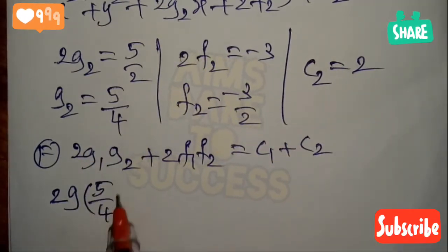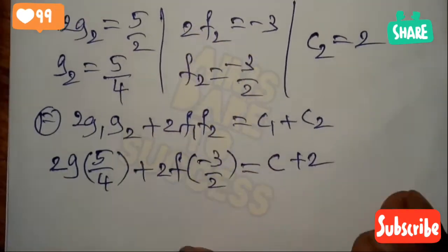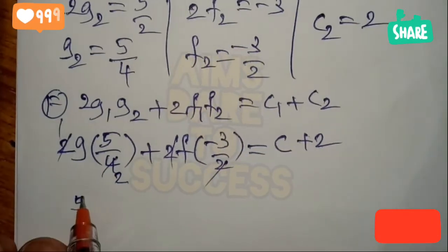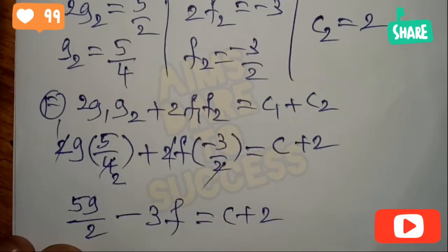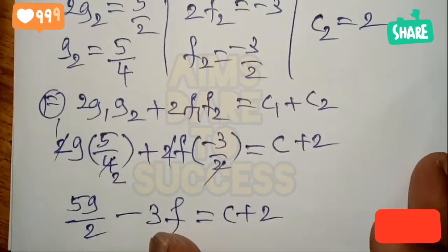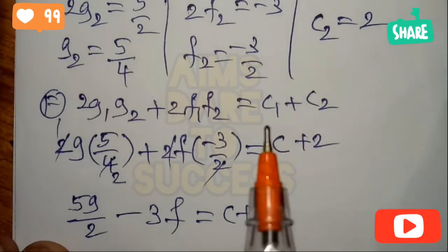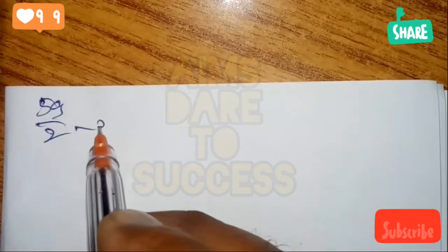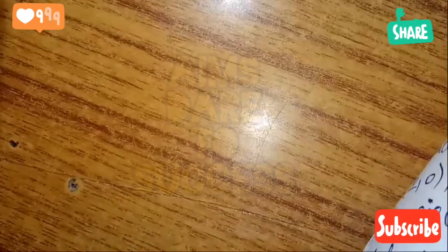Substituting values into the orthogonality formula: g₁ = g, g₂ = 5/4, f₁ = f, f₂ = -3/2, c₁ = c, c₂ = 2. So 2·g·(5/4) + 2·f·(-3/2) = c + 2. After cancellation, this becomes (5g/2) - 3f = c + 2. Rearranging: (5g/2) - 3f - c - 2 = 0, which is equation 5.